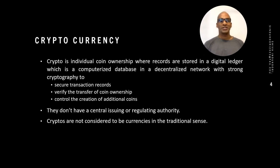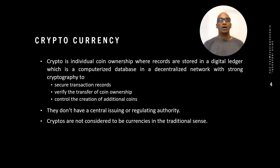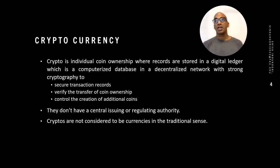Thanks to Dr. Douglas for valuable inputs and feedback every week. Crypto is individual coin ownership where transaction records are stored in a digital ledger — a computerized database in a decentralized network with strong cryptography. This is done to secure transaction records, verify the transfer of coin ownership, and control the creation of additional coins. Cryptos don't have a central issuing or regulating authority like the Federal Reserve here in the US.